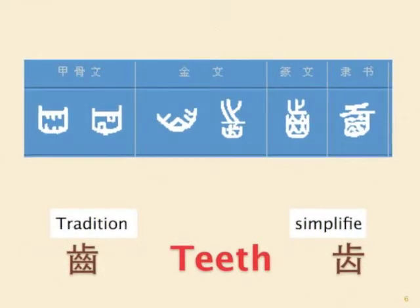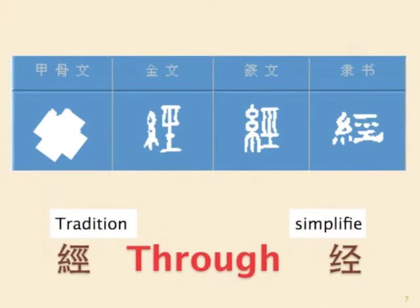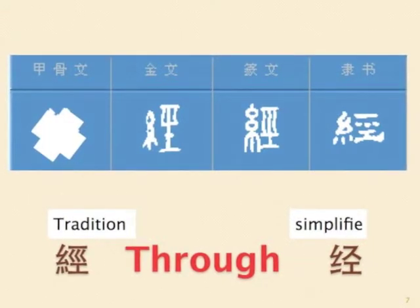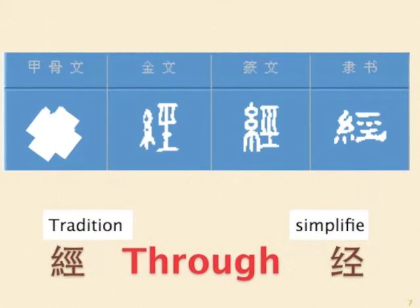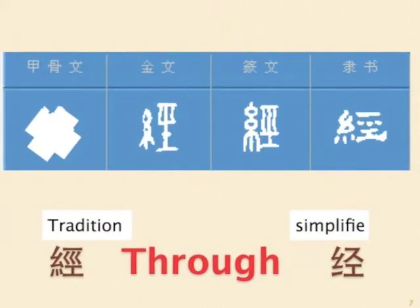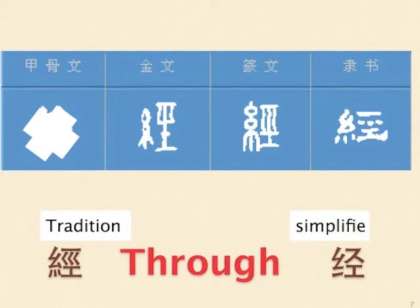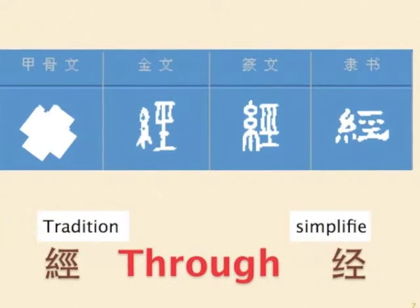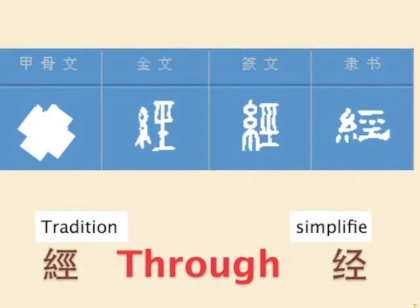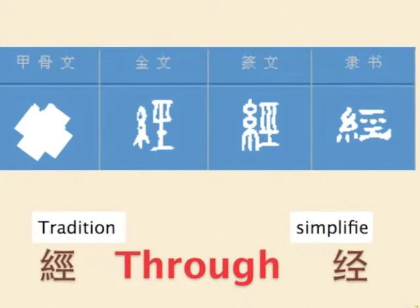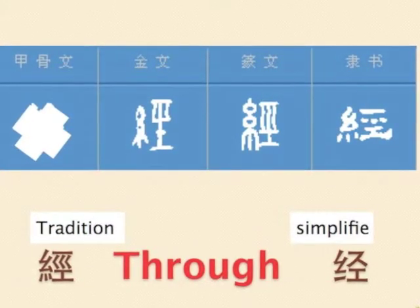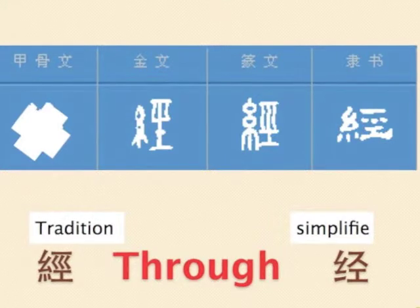Next word: through. The original meaning is silk placed on a machine through racks. The left part means silk, while the right part looks like three threads of silk placed through racks. The simplified form reduces the number of strokes for representing the silk.